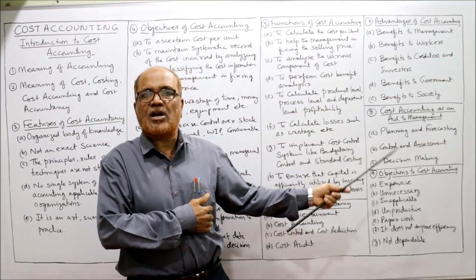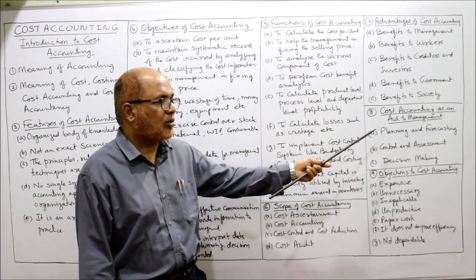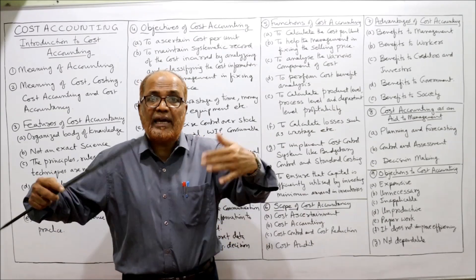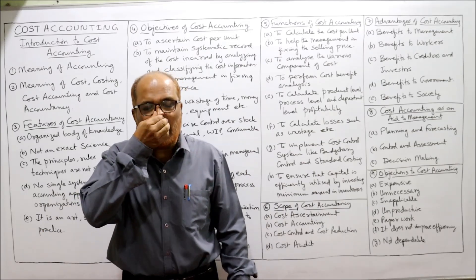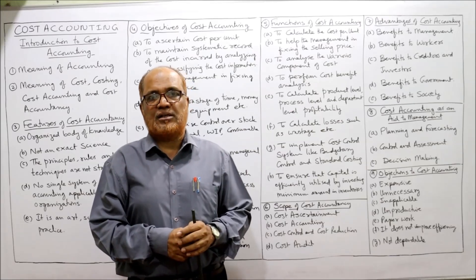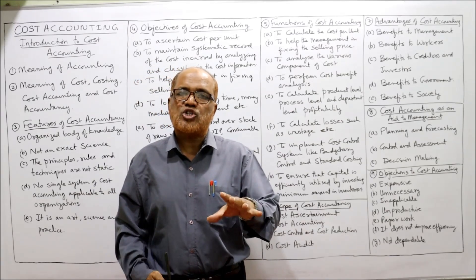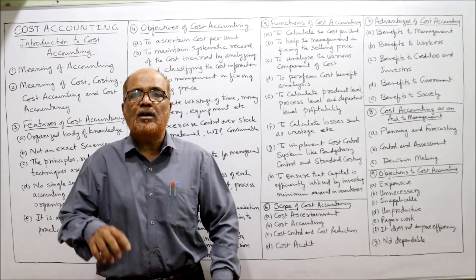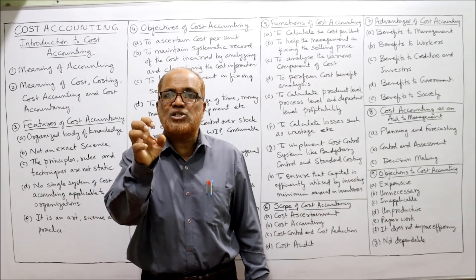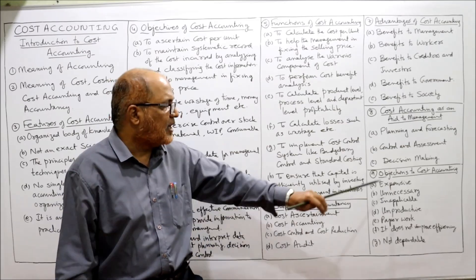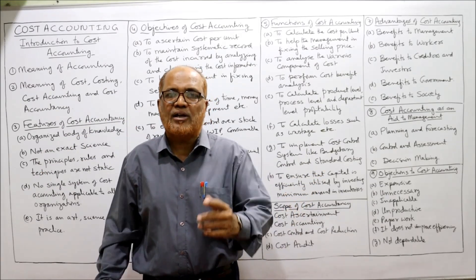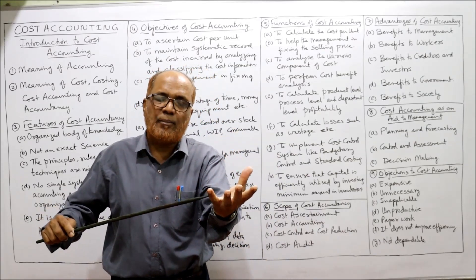Cost accounting as an aid to management: the biggest beneficiary of cost accounting is management. First, planning and forecasting — the first function of management is planning, which means deciding in advance. Cost accounting helps management in planning and forecasting. Second, control and assessment — management can control the cost of material, labor, and overheads with the help of cost accounting. Lastly, decision-making — cost accounting aids many decision areas.